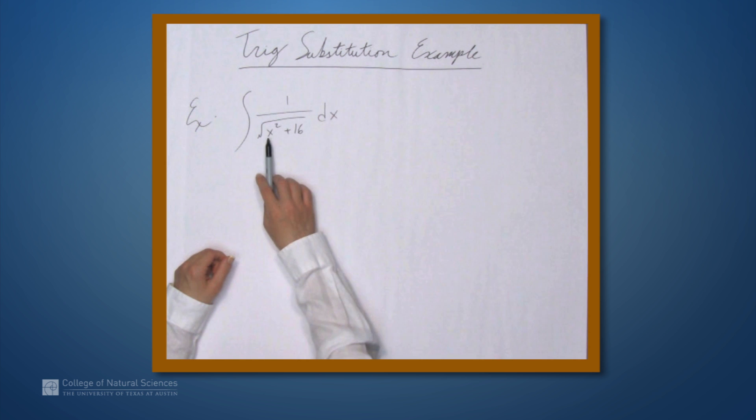So in this case, we see an x squared plus 16 under a square root. So there's no obvious thing that this equals, but we can use a trig identity here. And the trig identity that we can use is actually the one that relates tangent squared and secant.